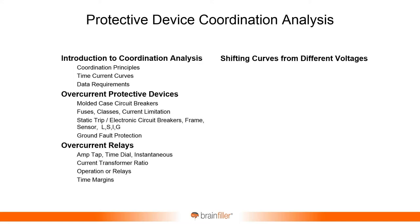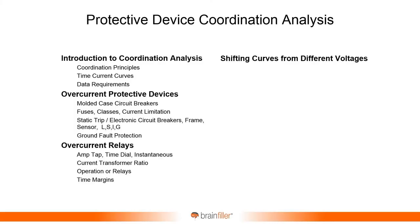We'll look at something known as shifting curves for different voltages. When you have overcurrent devices at two different voltages — such as a primary device and a secondary device on a transformer — they're seeing two different currents. It's more complex to evaluate which one would trip first. You can't just compare the two time current characteristics directly because they're seeing different currents. I'll show you how to address that — it's called shifting the curves, which I sometimes refer to as apparent coordination.